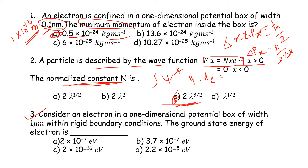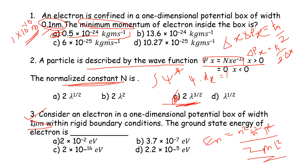Question 3: Consider an electron in a one-dimensional potential box of width 1 μm with rigid boundary conditions. The ground state energy is given by En = n²ℏ²π² / (2mL²). Substituting n=1 and L = 1 μm, the answer is 3.7×10⁻⁷ eV, which is the correct answer.